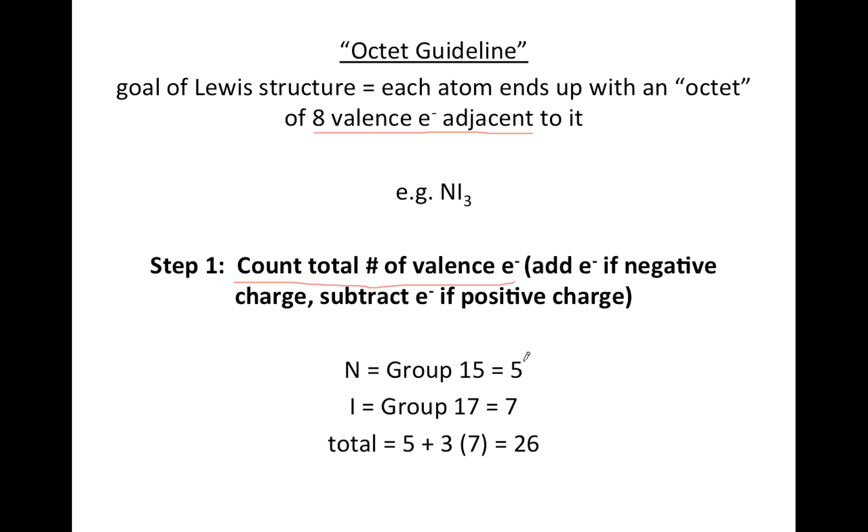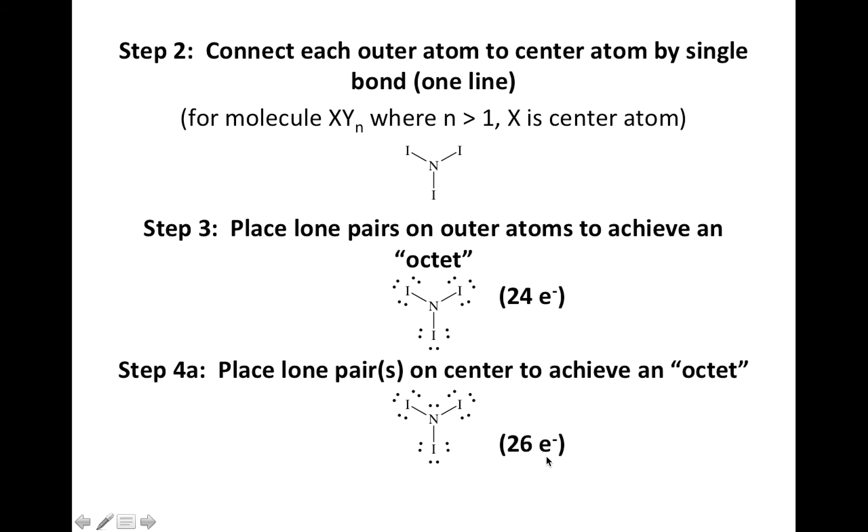you know that nitrogen is group fifteen, so five valence electrons, and iodine group seventeen means seven valence. So the total for nitrogen triiodide, one nitrogen, three iodines will be twenty-six valence electrons. That's what we're going to end up with in our final Lewis structure.